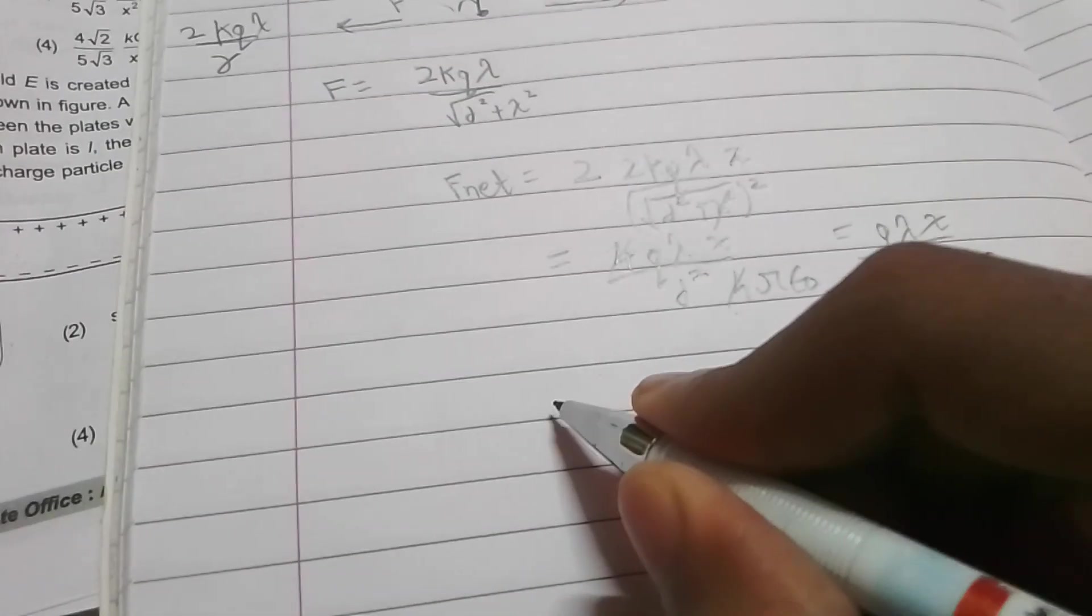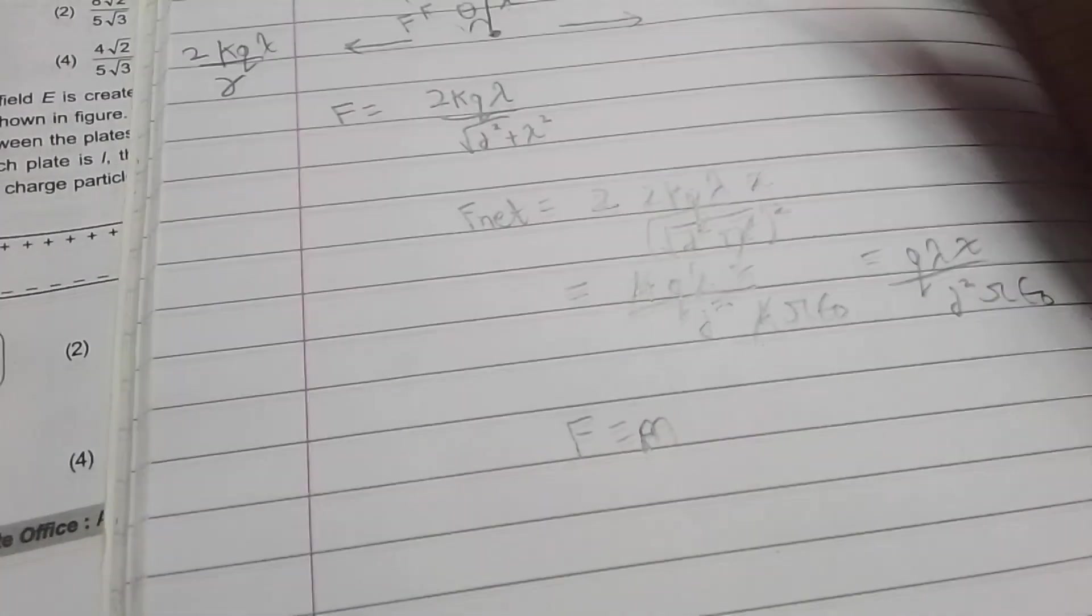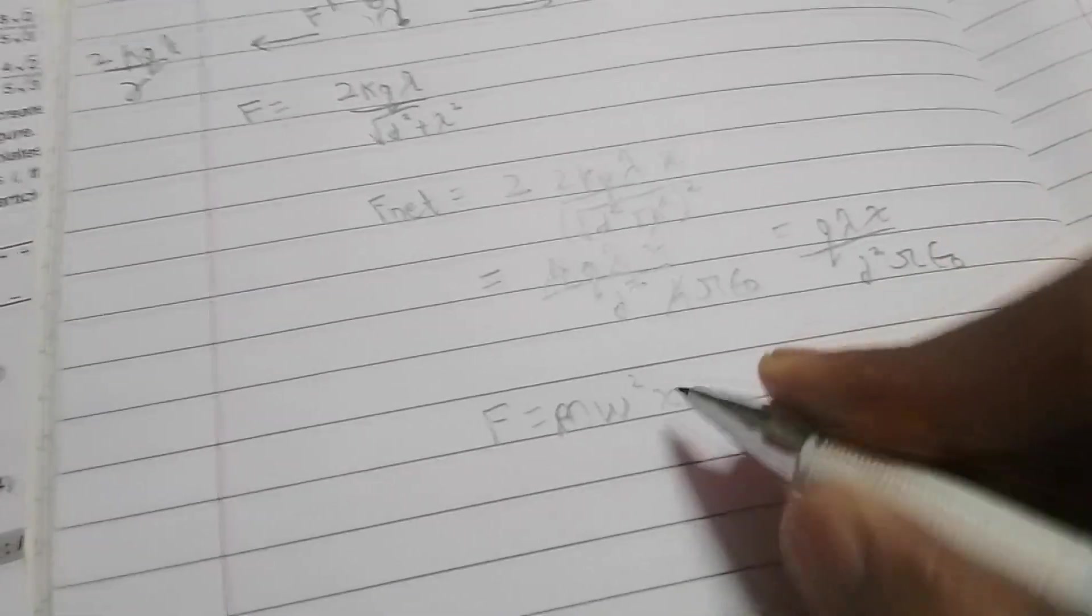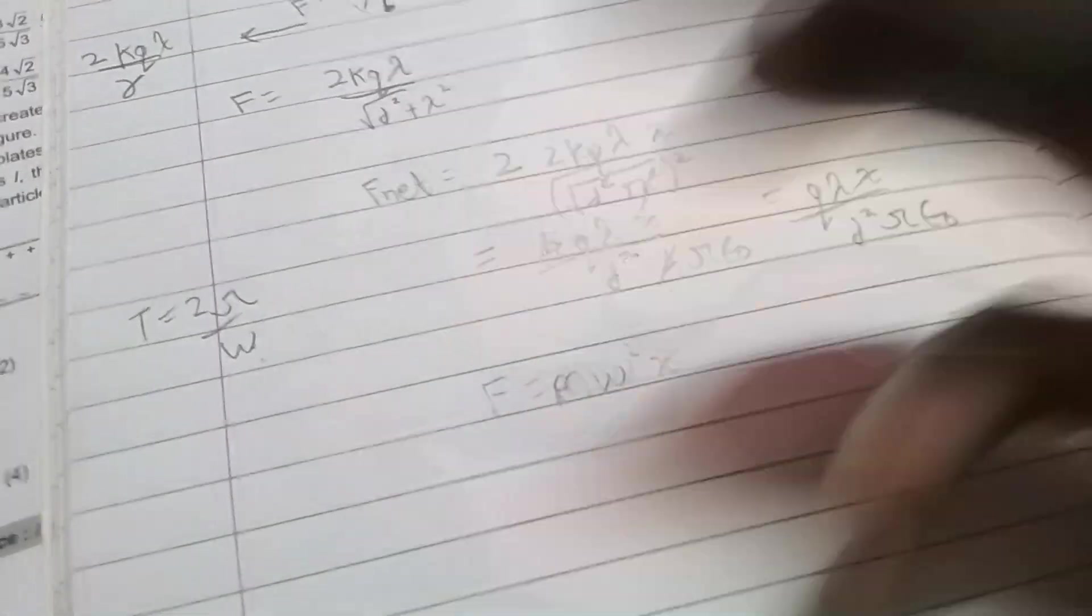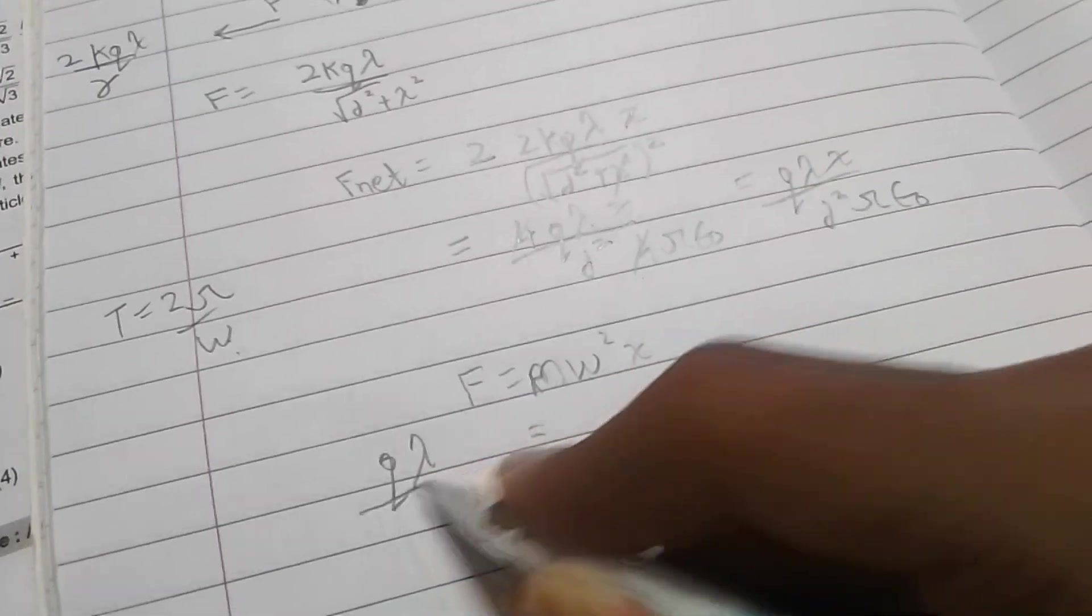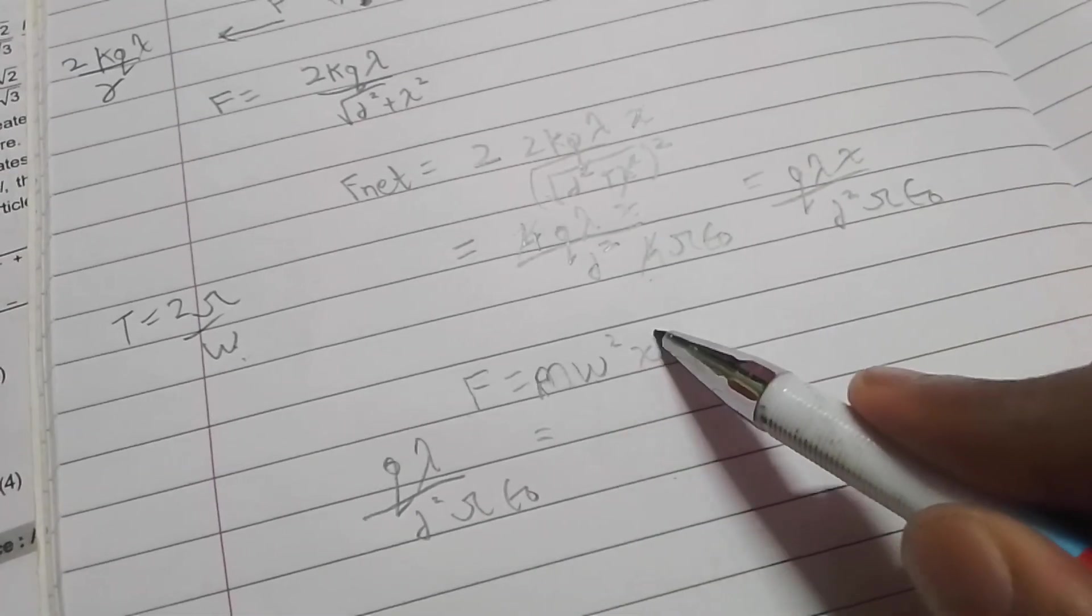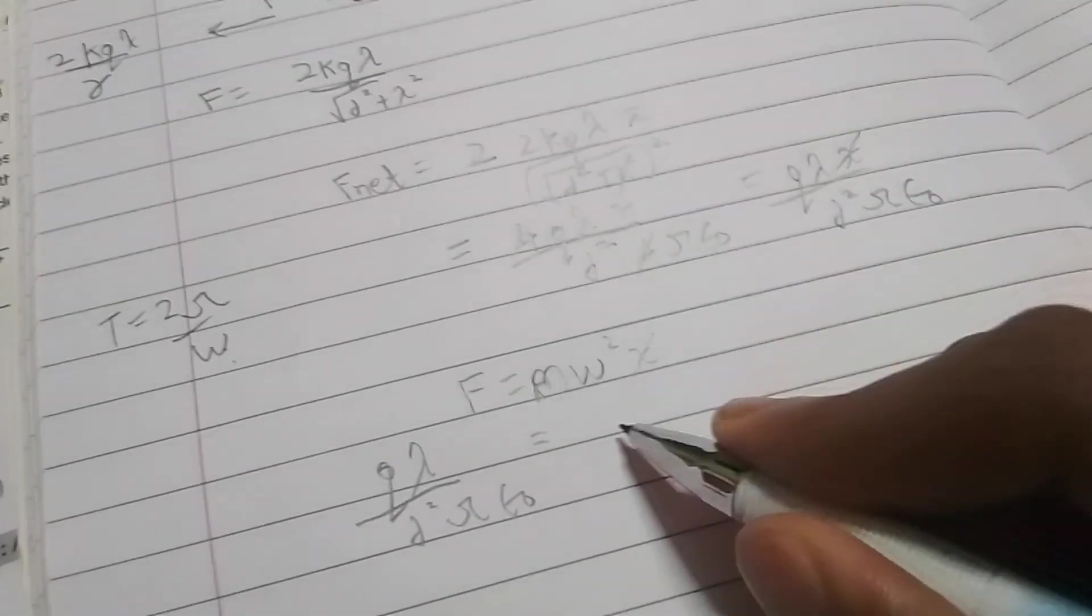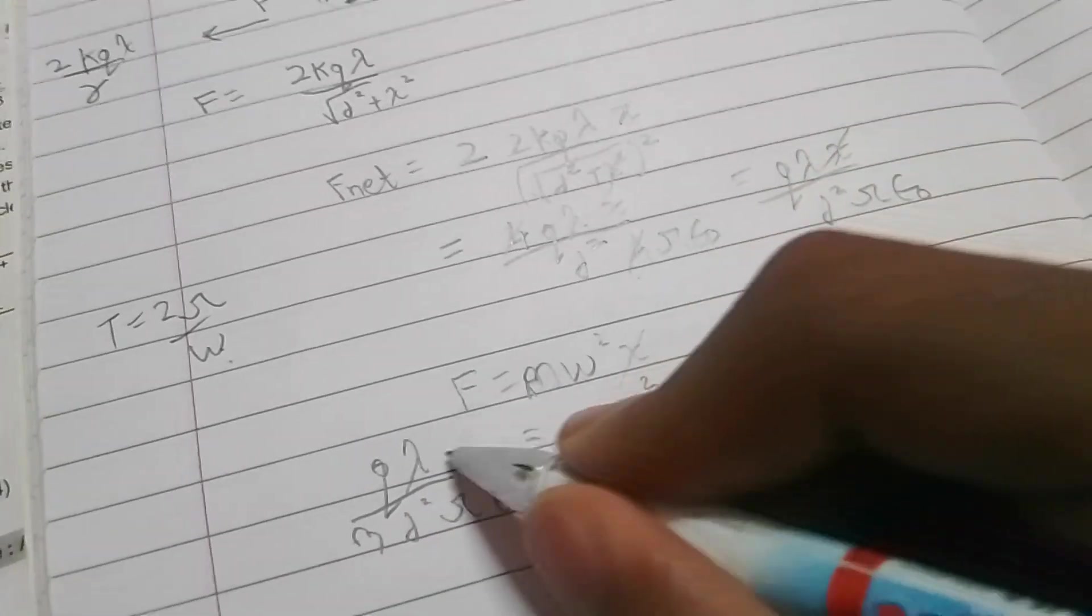Now, we know that force equals mass into acceleration. And what is acceleration? Acceleration is omega square x. Why I am writing it in these terms is we know time period is 2 pi by omega. And we need to find value of omega and then put it in this equation and we will get time period. Force is q lambda by d square pi epsilon naught. This x and x cancel out each other. Equal to m omega square. M will go here and root.